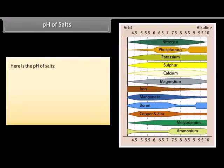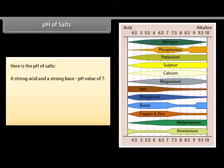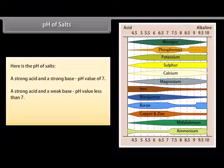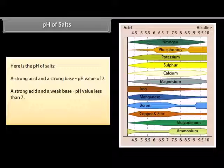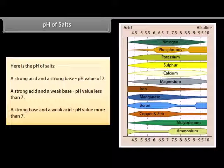The pH of salts: a salt formed from a strong acid and a strong base has a pH value of 7. A salt formed from a strong acid and a weak base has a pH value less than 7. A salt formed from a strong base and a weak acid has a pH value more than 7.